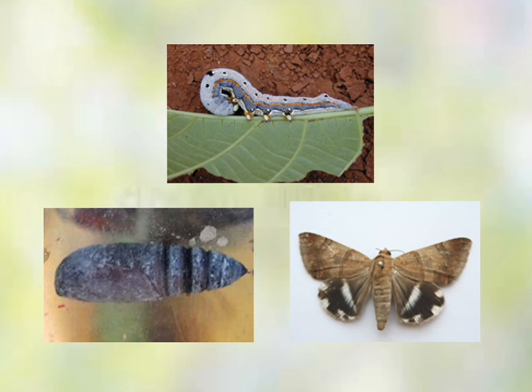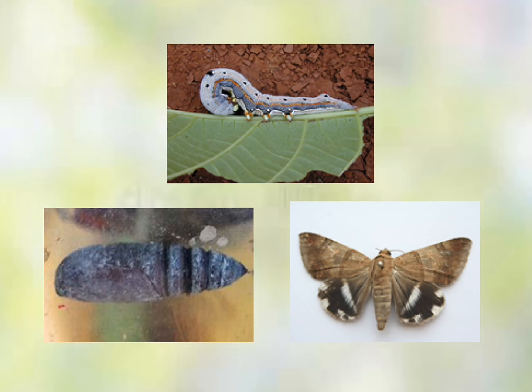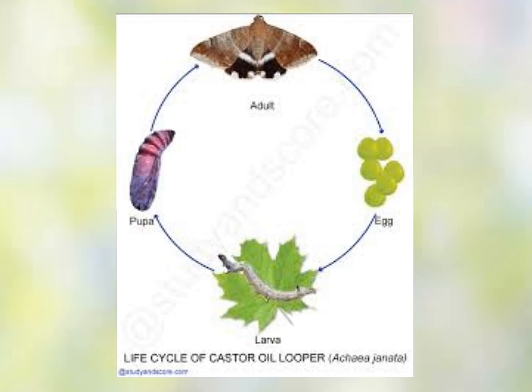In the adult stage, the pale reddish-brown moth has hind wings with a white spot in the middle and three large white spots on the outer margins. The egg period is 2–5 days, the larval period is 11–15 days, and it mostly pupates in the soil for about 10–14 days.